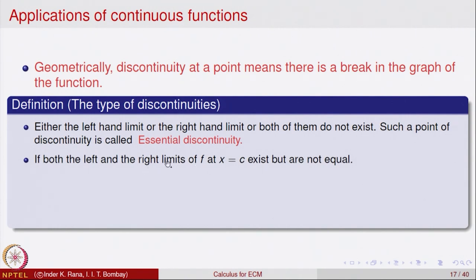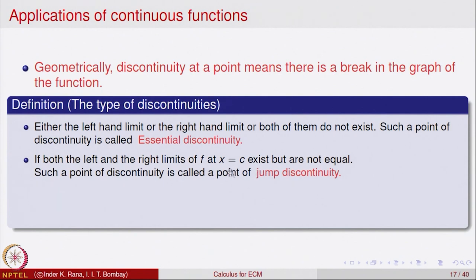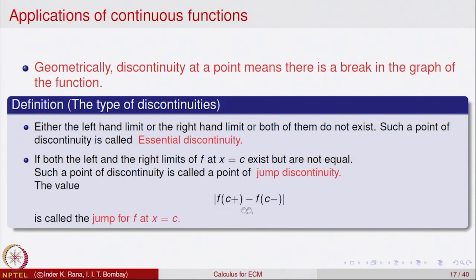The other possibility is when both the left and the right limit at x = c exist but are not equal. That implies the overall limit does not exist. This is called a point of jump discontinuity for the function. The left limit exists, the right limit exists, but they are not equal. The absolute value of the difference between the right limit and the left limit — that is called the jump of the function at that point.